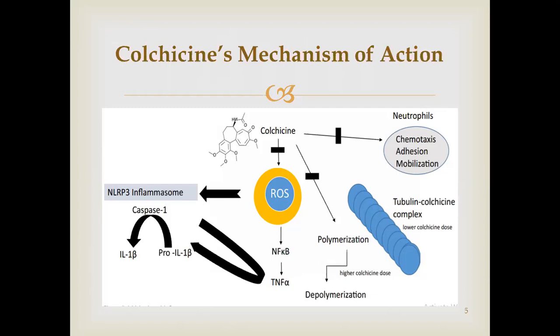Microtubules are involved in a variety of cellular processes such as cell division, maintenance of cell shape, cell signaling, signal transduction, cell migration, and cellular transport. Colchicine can inhibit all these functions and also blocks neutrophil chemotaxis. Most anti-inflammatory effects of colchicine are likely due to this disruption of microtubule function. Cells with high proliferative rates are disproportionately affected — which is why the GI tract is most commonly affected.